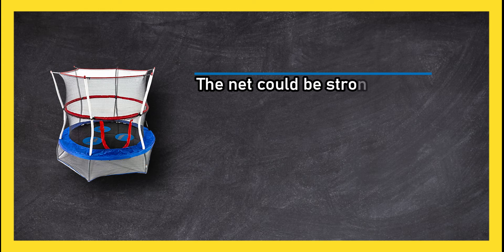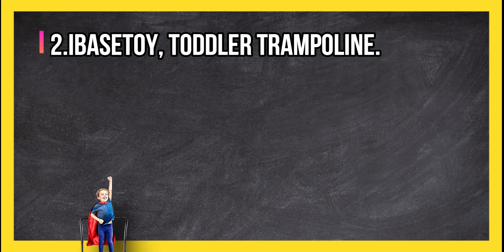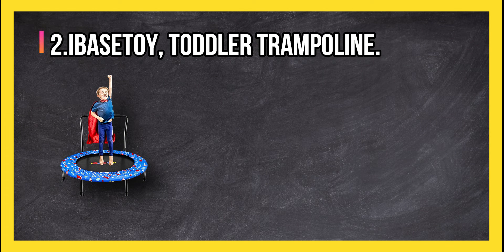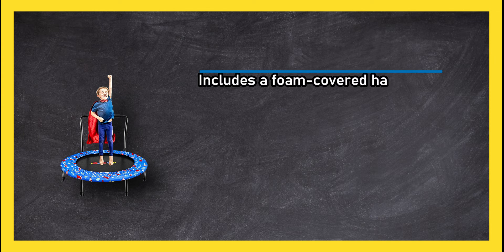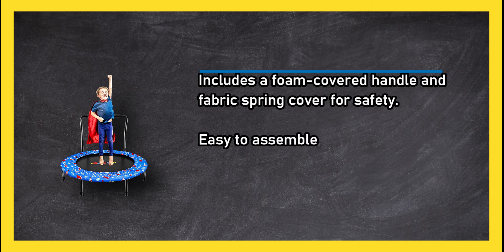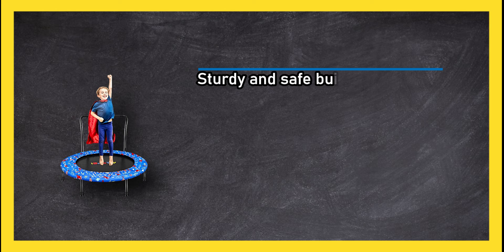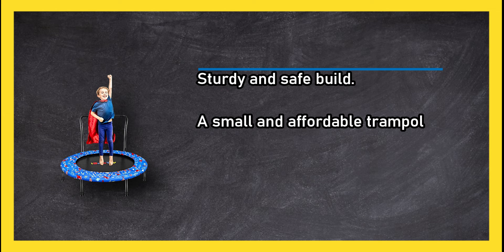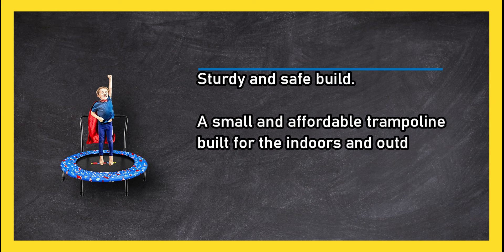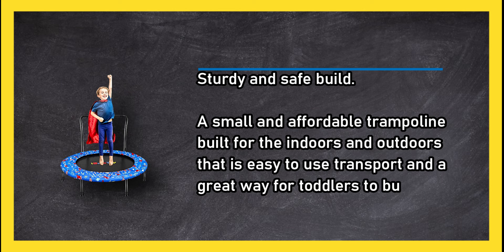The net could be stronger and can sometimes detach. At number two, I base toy toddler trampoline. Includes a foam covered handle and fabric spring cover for safety. Easy to assemble, disassemble, and store. Sturdy and safe build. A small and affordable trampoline built for indoors and outdoors that is easy to use, transport, and a great way for toddlers to burn energy.